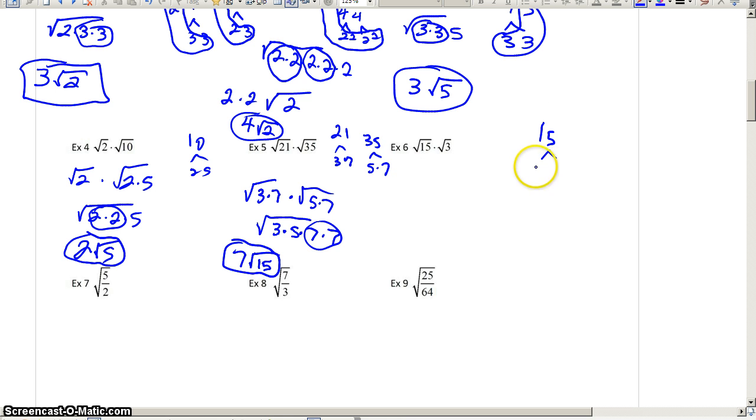For number 6, 15 is really 3 times 5. So we could begin to look at that radical in that light. Join your two radicals together. I'll have a 3, a 3, and a 5. But look at that, a pair of 3s. Out comes a 3. We still have a 5 inside. We are done.